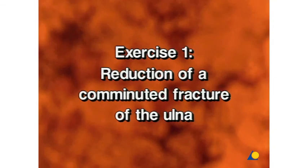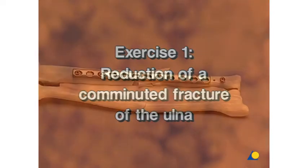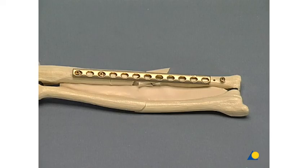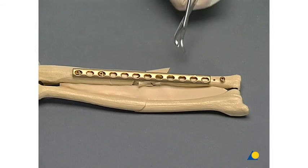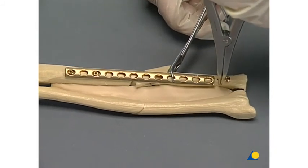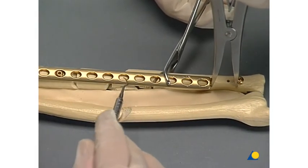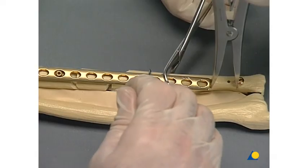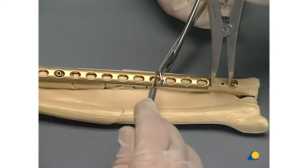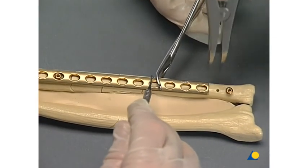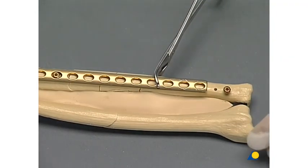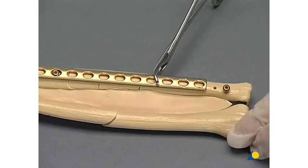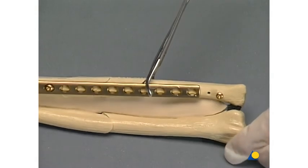Exercise 1: Reduction of a comminuted fracture of the ulna. In a complex forearm fracture, the mandatory anatomical reduction may be difficult without risk to vascularity. Distraction is achieved by fixing on the proximal fragment an LC-DCP of pre-planned length — 12 holes in this instance — and placing a screw in the distal ulna about a centimeter beyond the plate. The surgeon uses a spreader to produce distraction and indirect reduction of the fragments under the plate, which now bridges the fracture. A standard forearm approach will be needed. Risk to the vascularity of the fragments is diminished because none of the fragments is handled directly. Of course, the radius must also be fixed.